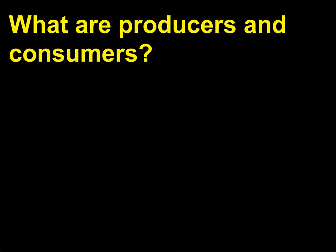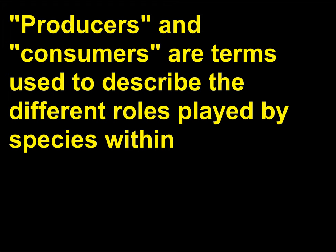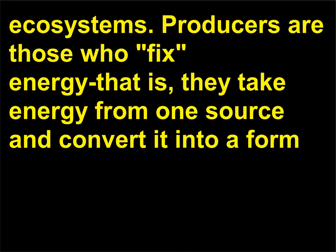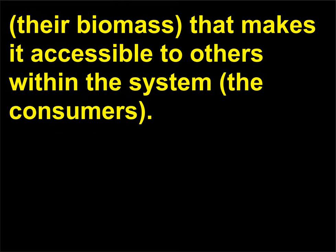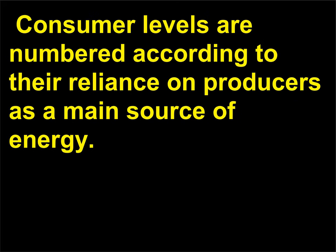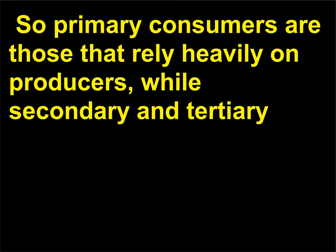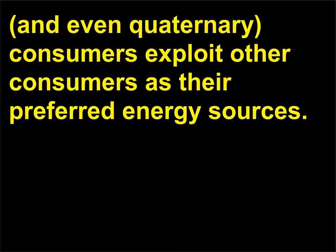What are producers and consumers? Producers and consumers are terms used to describe the different roles played by species within ecosystems. Producers are those who fix energy — they take energy from one source and convert it into a form (their biomass) that makes it accessible to others within the system, the consumers. Consumer levels are numbered according to their reliance on producers; primary consumers rely heavily on producers, while secondary, tertiary, and even quaternary consumers exploit other consumers as their preferred energy sources.